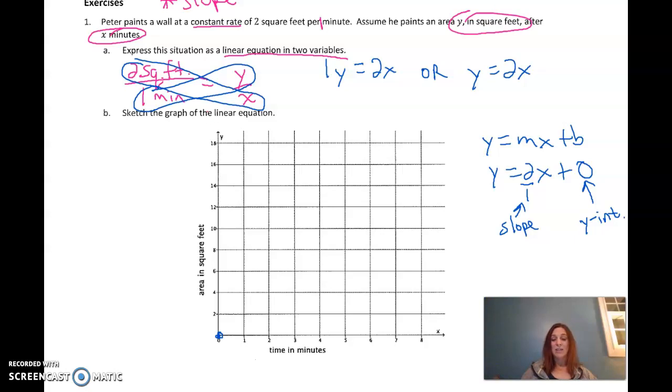We have our x-axis here, which is time in minutes. Now that's going by 1s. 1, 2, 3, 4. But our area in square feet, that's going up by 2s. 2, 4, 6. So when our slope is rise 2, I have to just rise 2. 1, 2. But then I run 1 all the way over here to 1.